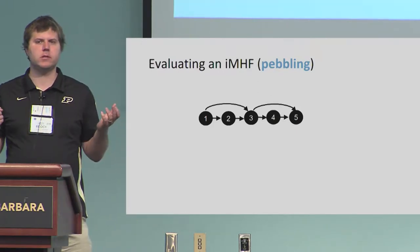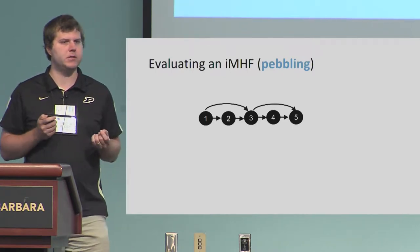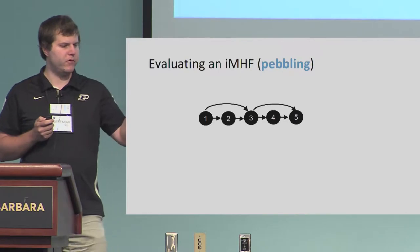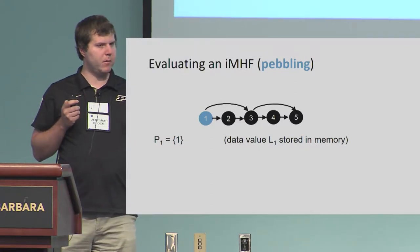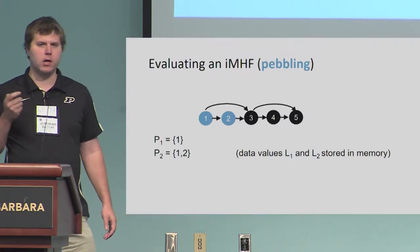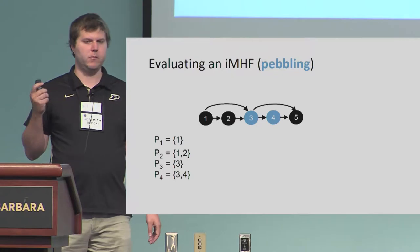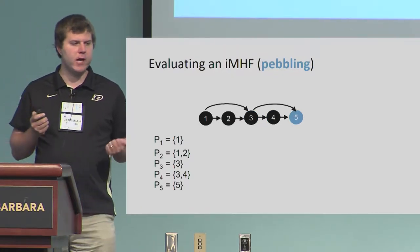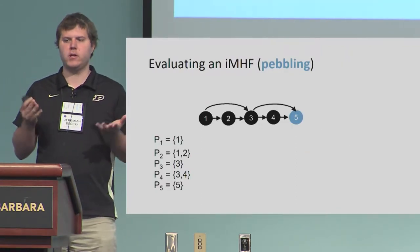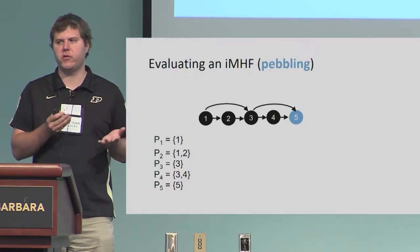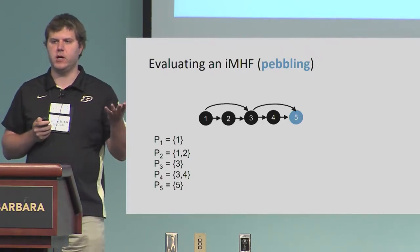When we talk about evaluating a memory-hard function, a common way to describe evaluation strategies is in terms of graph pebbling. We start off with no pebbles in the graph, then we can place a pebble on the source. Once we have a pebble on node one, we can place a pebble on node two, then node three, then pebble node four, node five, et cetera. The rules of pebbling are: you have to wait to pebble a node until all the dependent data labels are already in memory.